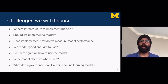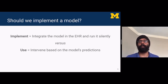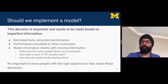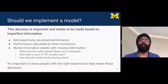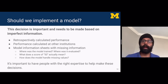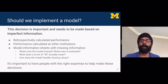Once we have infrastructure in place to actually implement models, the question comes up: should we implement a model? When I say implement for this talk, I mean integrate the model in the electronic health record and run it silently. When I say use, I mean intervene based on the model's predictions, such as by linking it to a clinical workflow. The decision to implement a model is important even though the model is not being shown to anyone and no action is being taken, because every time you go to implement a model, even just to run it silently, it requires a fair bit of effort on the part of an analyst to connect up the model. You're also committing yourself to reviewing that model after it's been running for several months and has accumulated enough data for a stable estimate of model performance.